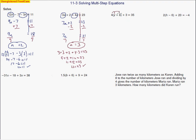Here I'm using the distributive property. I'm going to distribute the 4 over that expression, so now I've got 4y plus 20 plus 3 equals 35. Now I'm going to collect some like terms — still on the same side of the equal sign — just reducing this to make it a two-step equation. I combine the 20 and the 3 to make 23.